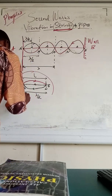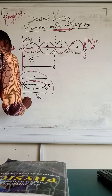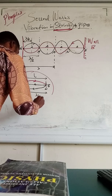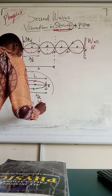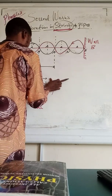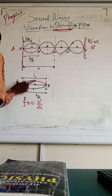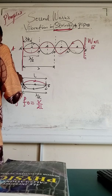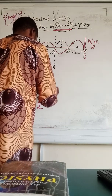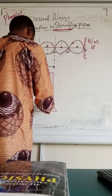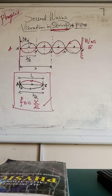In summary, what we have here is F naught equals V over 2L. Please take note: F naught equals V over 2L.